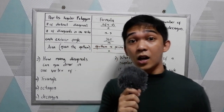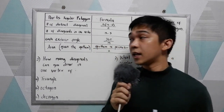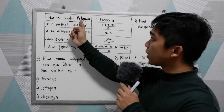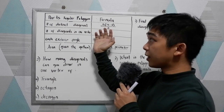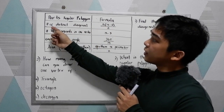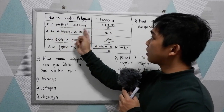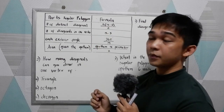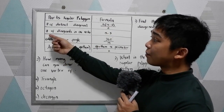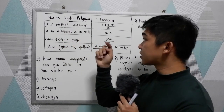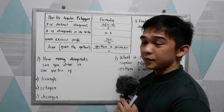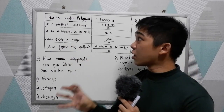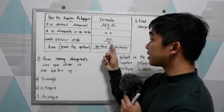You will also encounter the following formulas for the parts of a regular polygon. To get the number of distinct diagonals, we have n(n-3) all over 2. If you want to get the number of diagonals from one vertex, that is n-3. And if you want to get each exterior angle of a regular polygon, that is 360 over n.